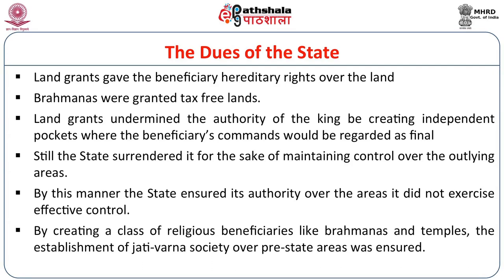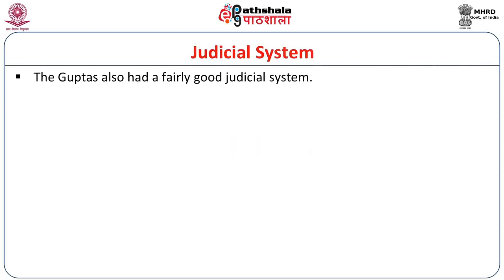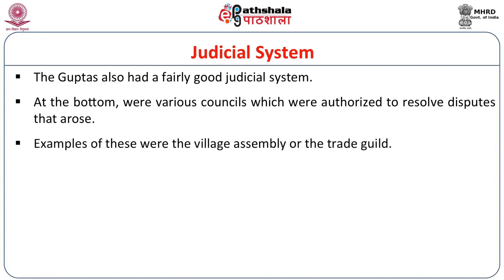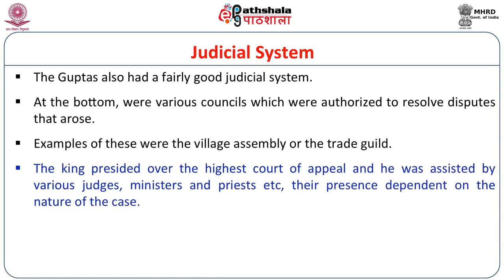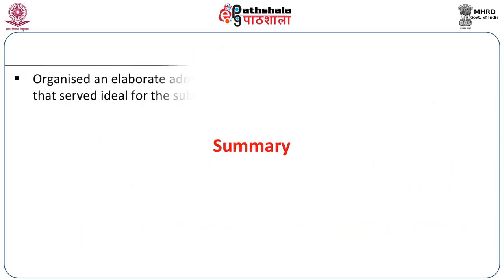Land grants were nonetheless surrendered by the state to maintain control over outlying areas — by creating a class of religious beneficiaries like Brahmanas and temples, establishment of the jati-varna society over pre-state areas was ensured. The judicial system under the Guptas was fairly good. At the bottom were various councils authorized to resolve disputes — such as the village assembly or trade guild. The king presided over the highest court of appeal, assisted by various judges, ministers, and priests, with judgements based on legal texts, social customs, or specific edicts from the king.